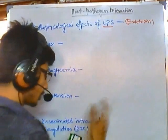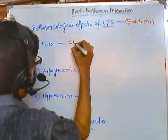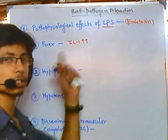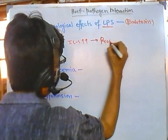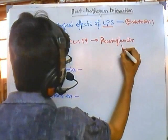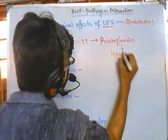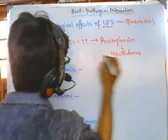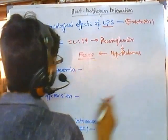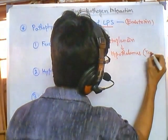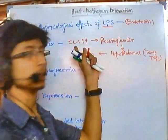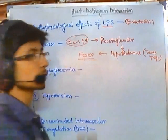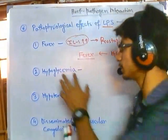Regarding fever: the endotoxin elevates the concentration of interleukin-1, which in turn increases prostaglandin levels. This destabilizes the hypothalamus, where temperature regulation becomes imbalanced due to the changes in prostaglandin and interleukin-1 levels, ultimately causing high fever.